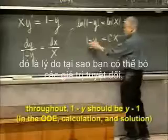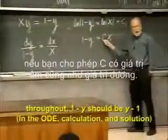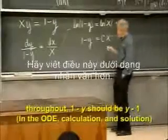first, by letting c be negative, that's why you can get rid of the absolute values. If you allow c to have negative values as well as positive values.